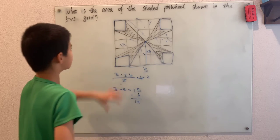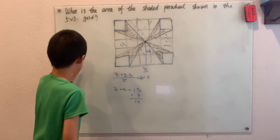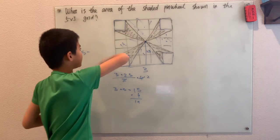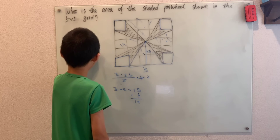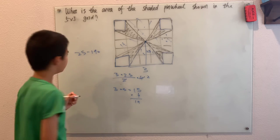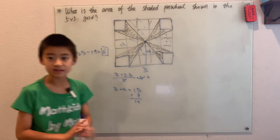So now we take this whole 5 by 5 square, which is 25 square units, and then we subtract off the 19 that aren't part of the pinwheel. And then we get 25 minus 19, which is 6 as our answer.